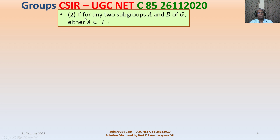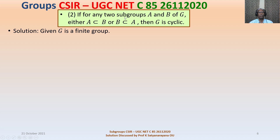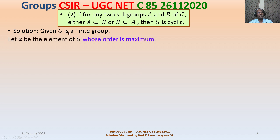Now the second statement: if for any two subgroups A and B of G, either A is contained in B or B is contained in A, then G is cyclic. We have G a finite group. List the elements of G and their orders — these orders are positive integers. Since G is finite, choose an element X of maximum order among all elements of G.